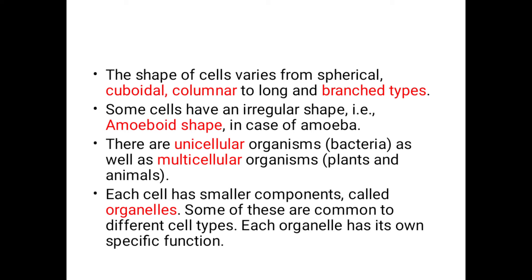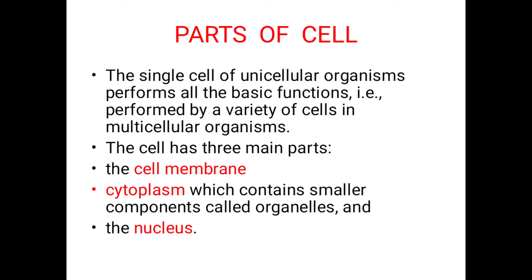Some cells have irregular shape, that is amoeboid shape, in the case of amoeba. There are unicellular organisms like bacteria as well as multicellular organisms like plants and animals. Each cell has smaller components called organelles. Some of these are common to different cell types, and each organelle has its own specific function.